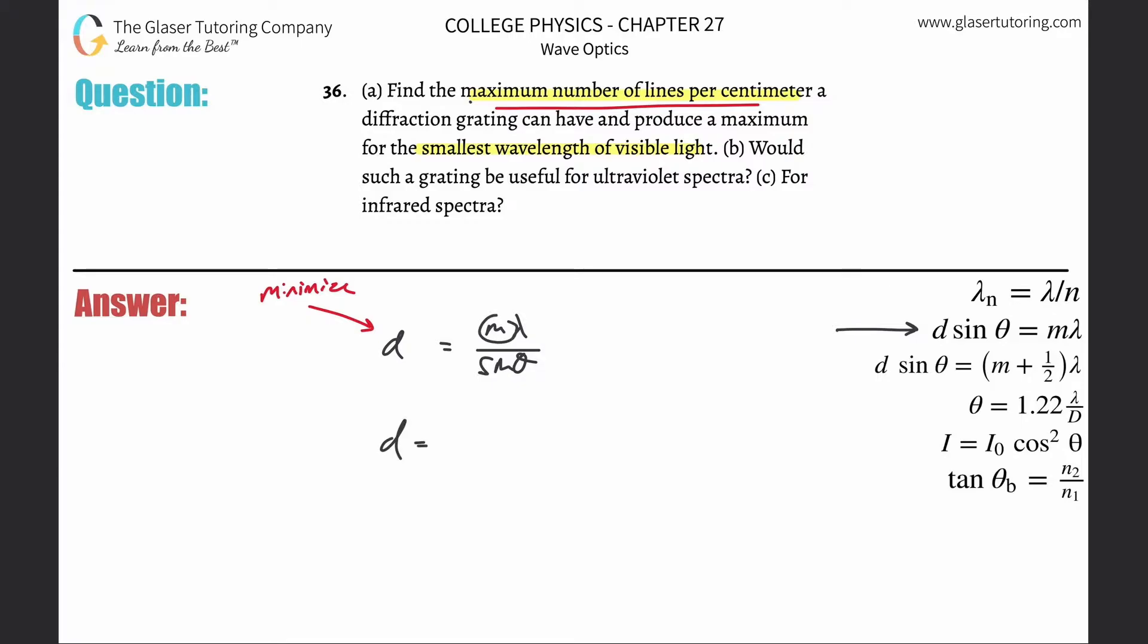In order to minimize d now, I'm going to choose the smallest value for m, which would be the first order. The wavelength I can't choose—it's giving me the smallest wavelength so that's what I'm going to use. It just so happens that that'll minimize it as well. So this is 380 times 10 to the minus ninth in terms of meters.